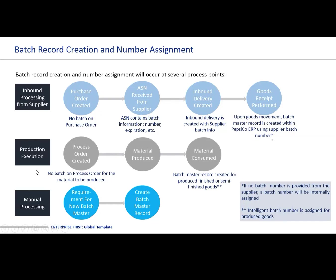Within the production execution, a process order is created, the material is produced, and the raw materials that created that material are consumed. It is at this point that the intelligent batch number is assigned for the produced goods. There is a manual processing requirement for a new batch master record, which will create a batch master record, and there is a manual processing record within the background for new products.